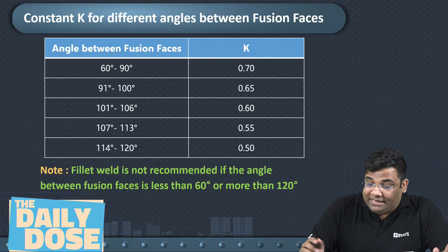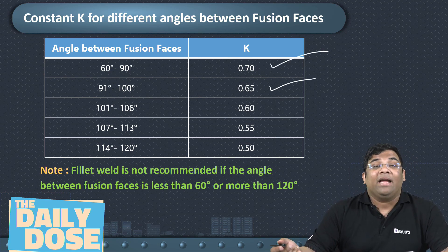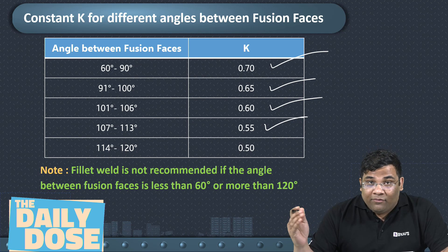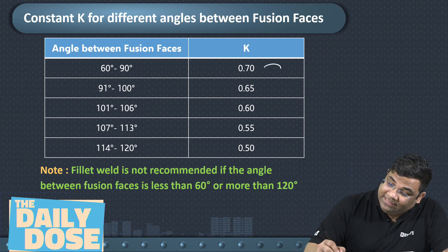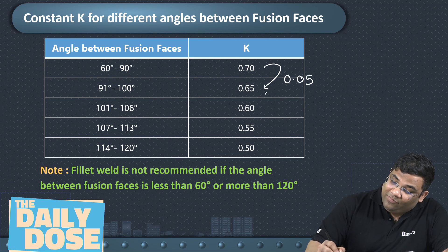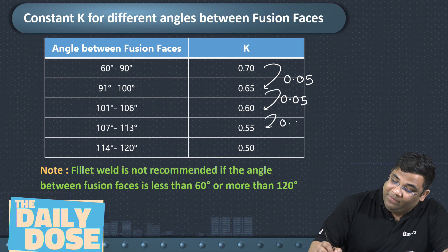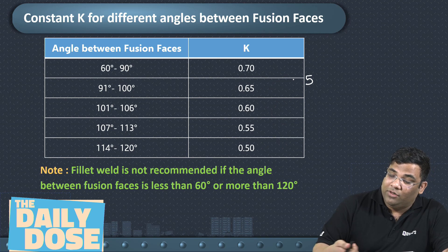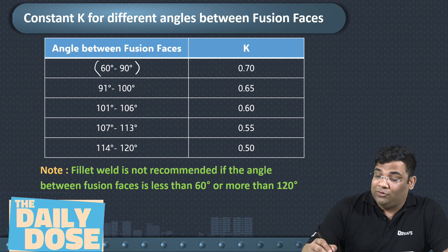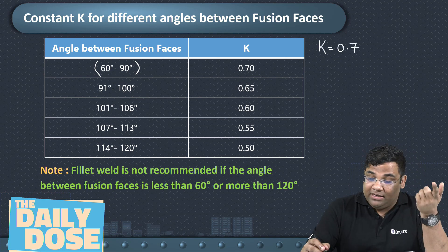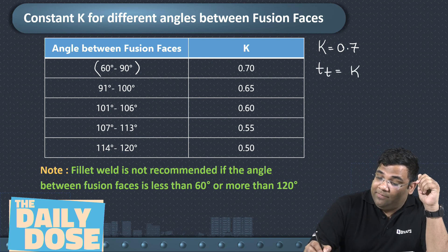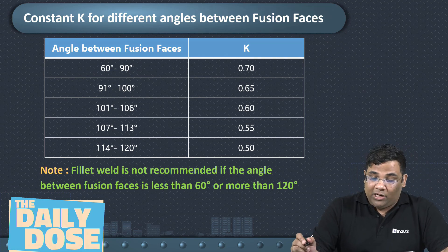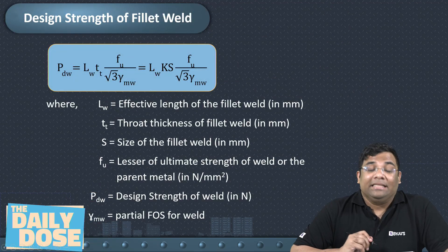The effective throat thickness is k into s. The value of k depends on the fusion angle: for 60–90° it is 0.7, for 91–100° it is 0.65, for 101–106° it is 0.6, for 107–113° it is 0.55, and for 114–120° it is 0.5 — decreasing by 0.05 each interval. If the fusion angle is not mentioned, assume k = 0.7 as the default.